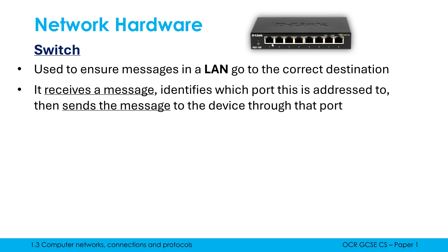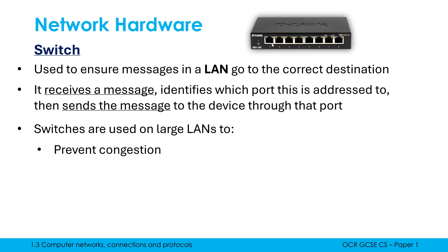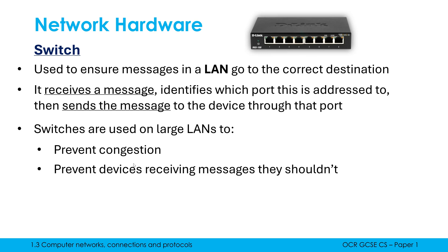Most normal LANs don't need a switch. However, on the bigger end — like an office building or school — switches help prevent congestion by sending messages in a targeted way: the message goes into the switch and comes out the correct wire to the destination. An alternative is a hub, which receives a message and sends it out to every other device on the network. On a large network with hundreds of devices, this becomes very congested, and also has security implications — a switch prevents devices from receiving messages they shouldn't have access to.